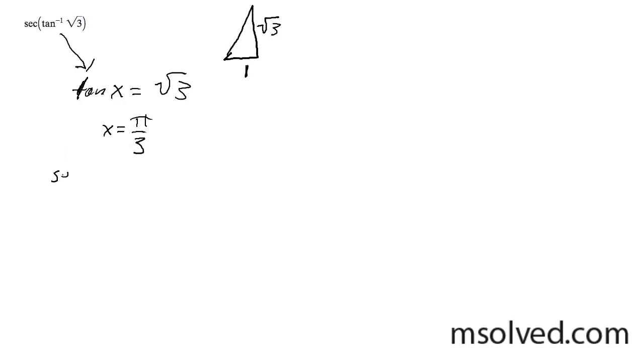And then you plug that into your secant here. And the secant of pi over 3, it's simply the reciprocal of cosine. We've got 2 here, so this is simply equal to 2 over 1 or simply 2.